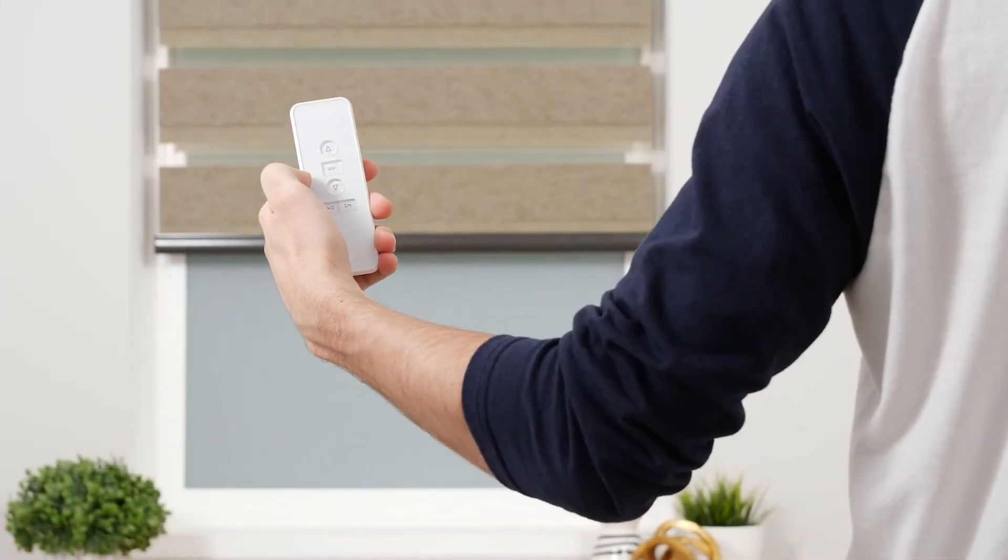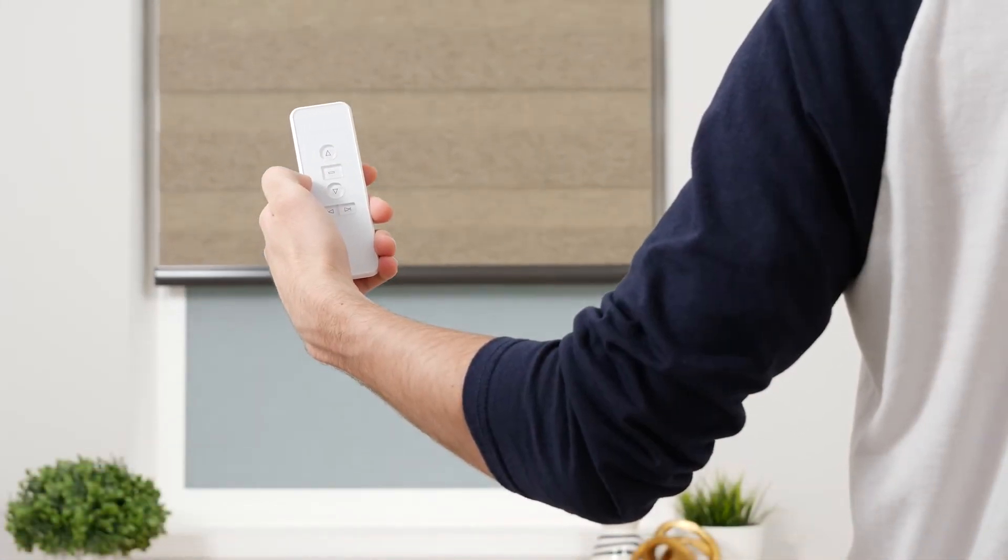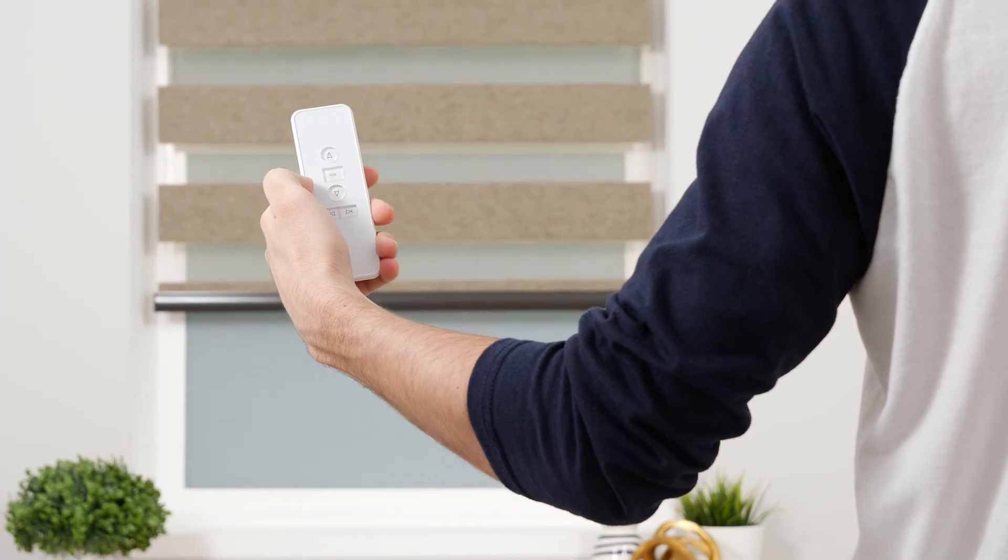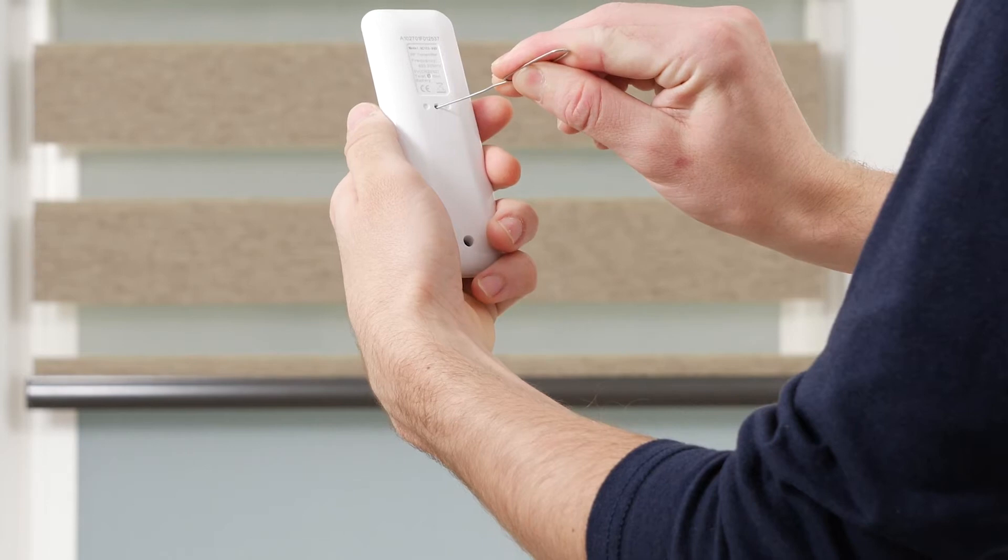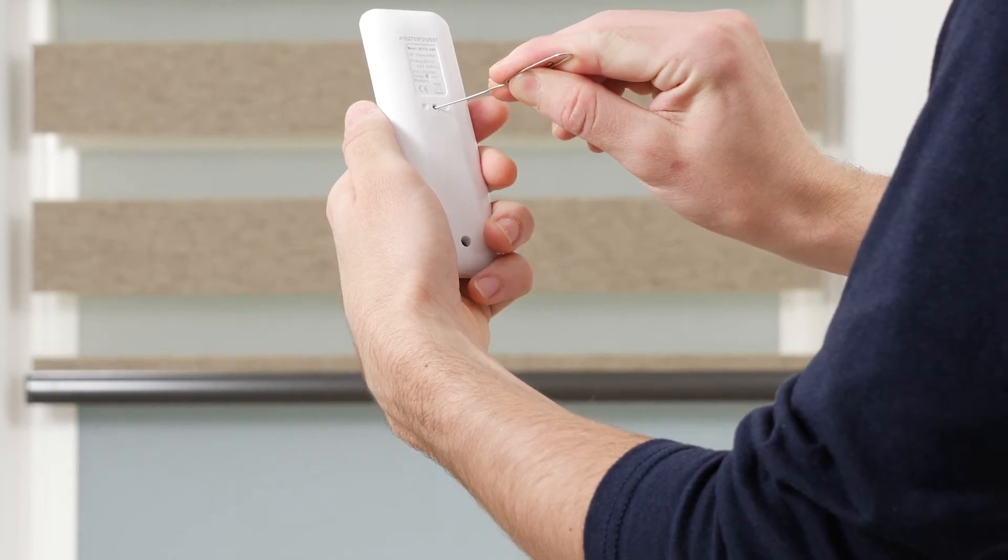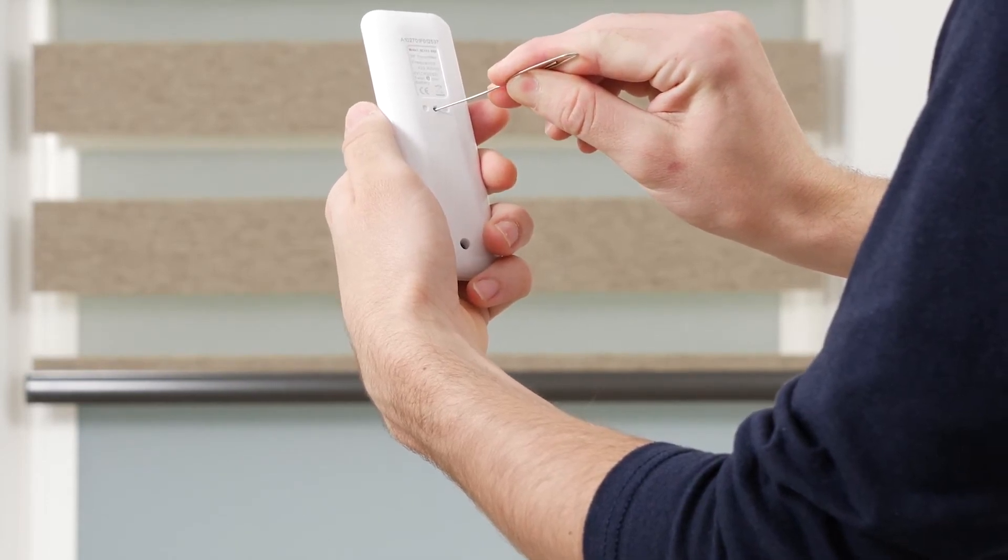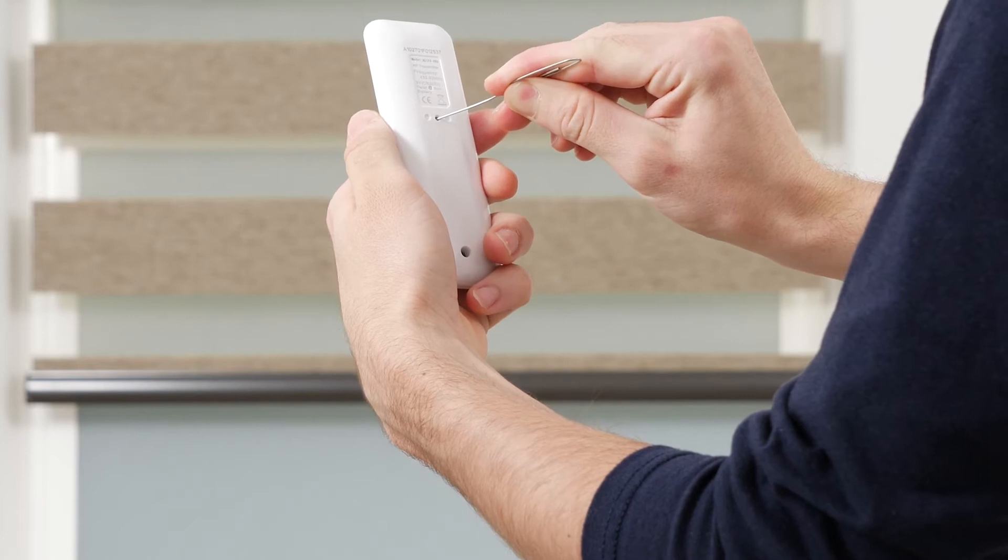To delete an existing favorite, move the shade to the position you want to remove. Then press and hold the program button on the back of the remote for about seven seconds. The shade will jog once before the seven seconds and once after. This confirms that your favorite position has been deleted.